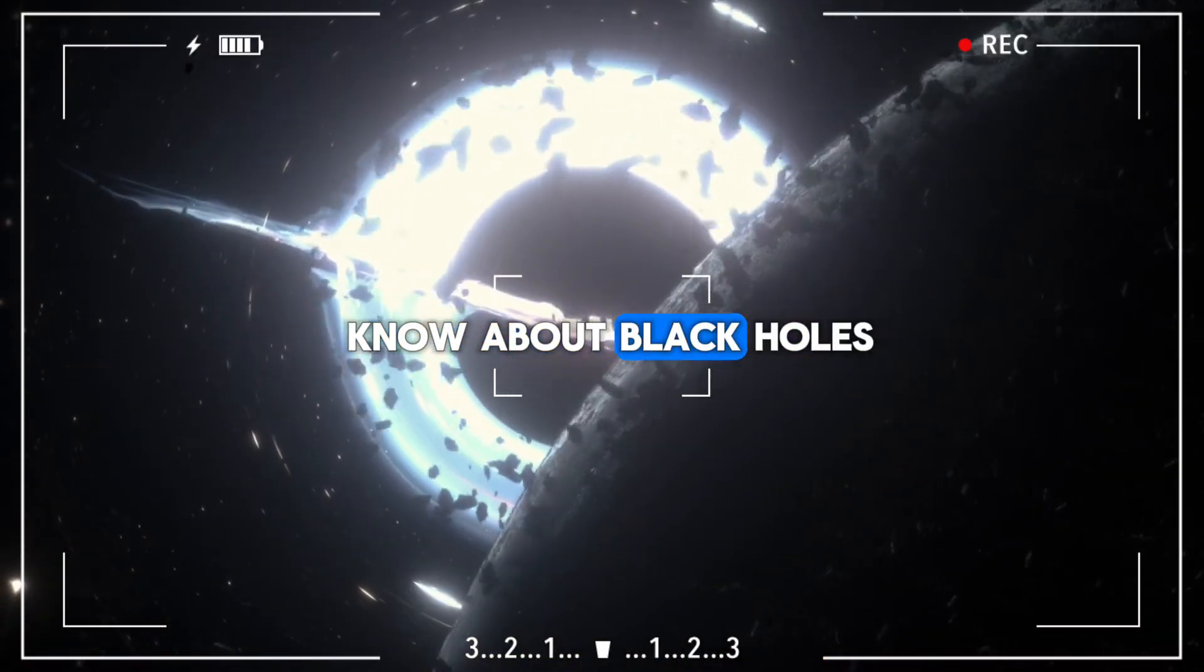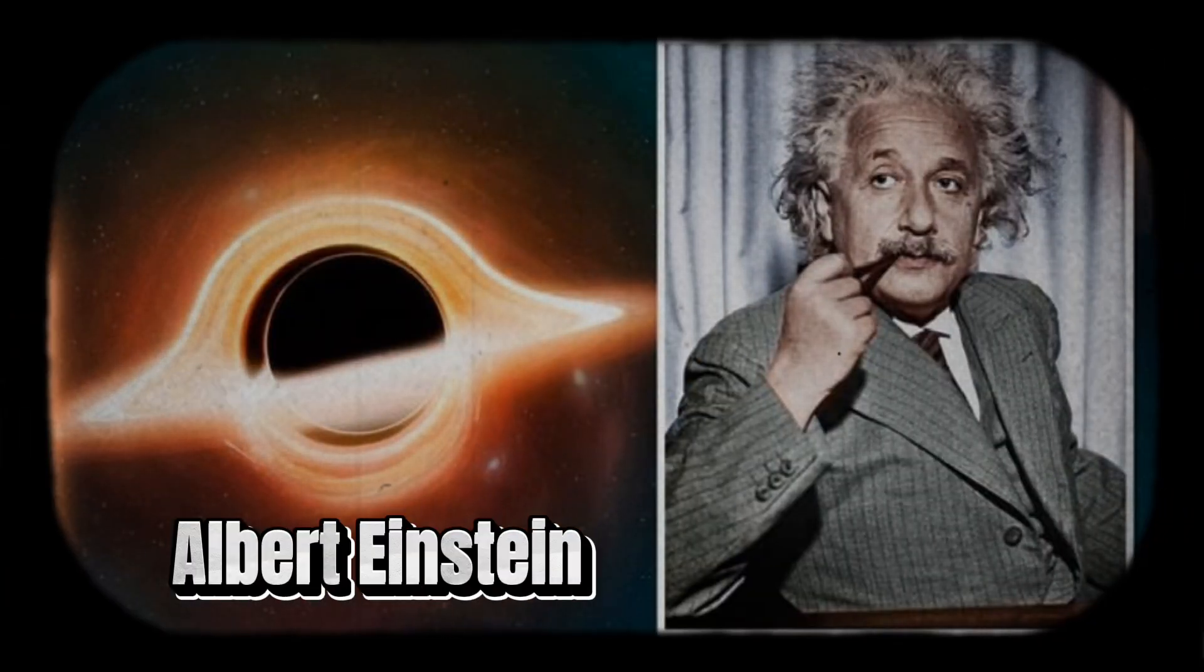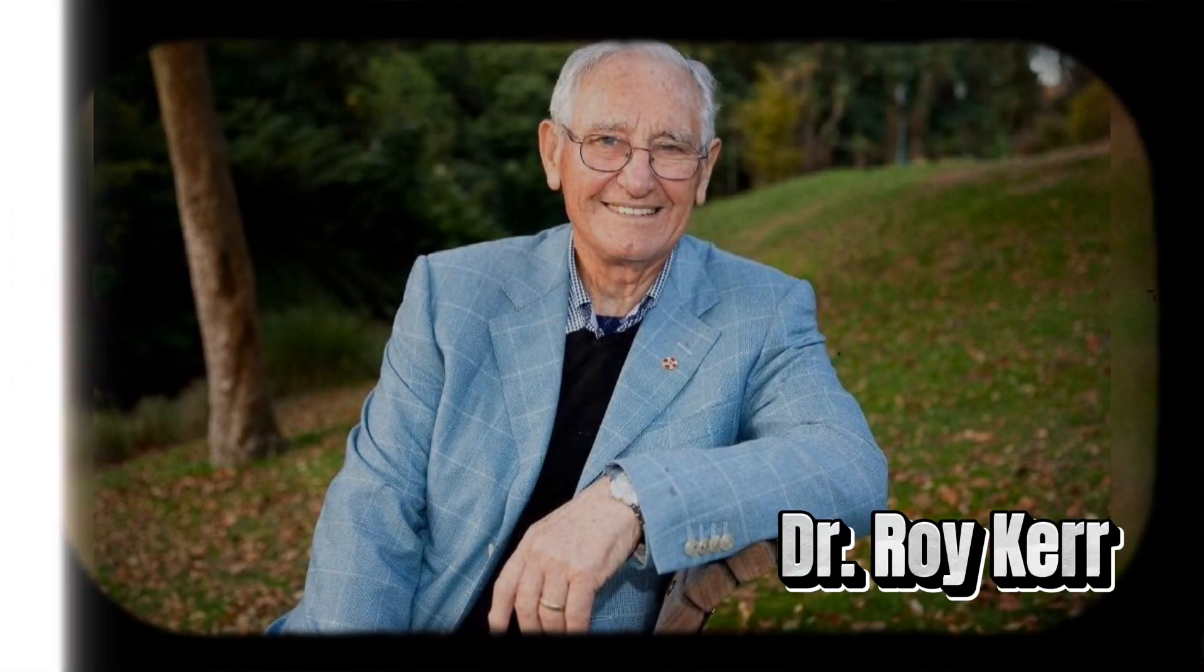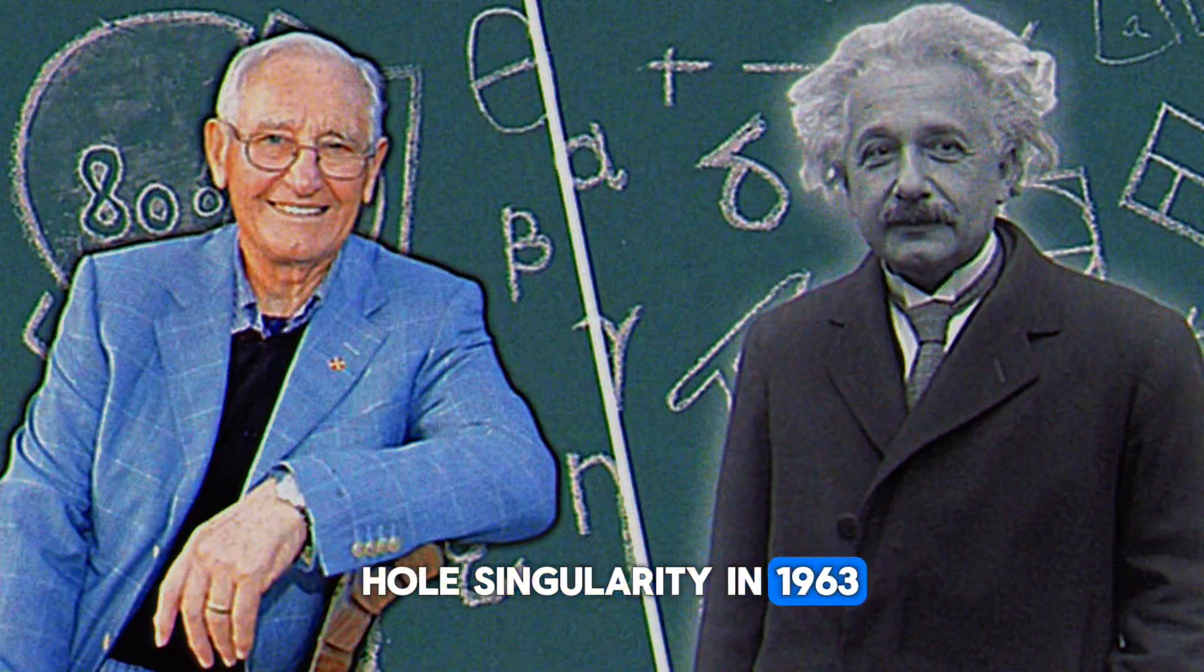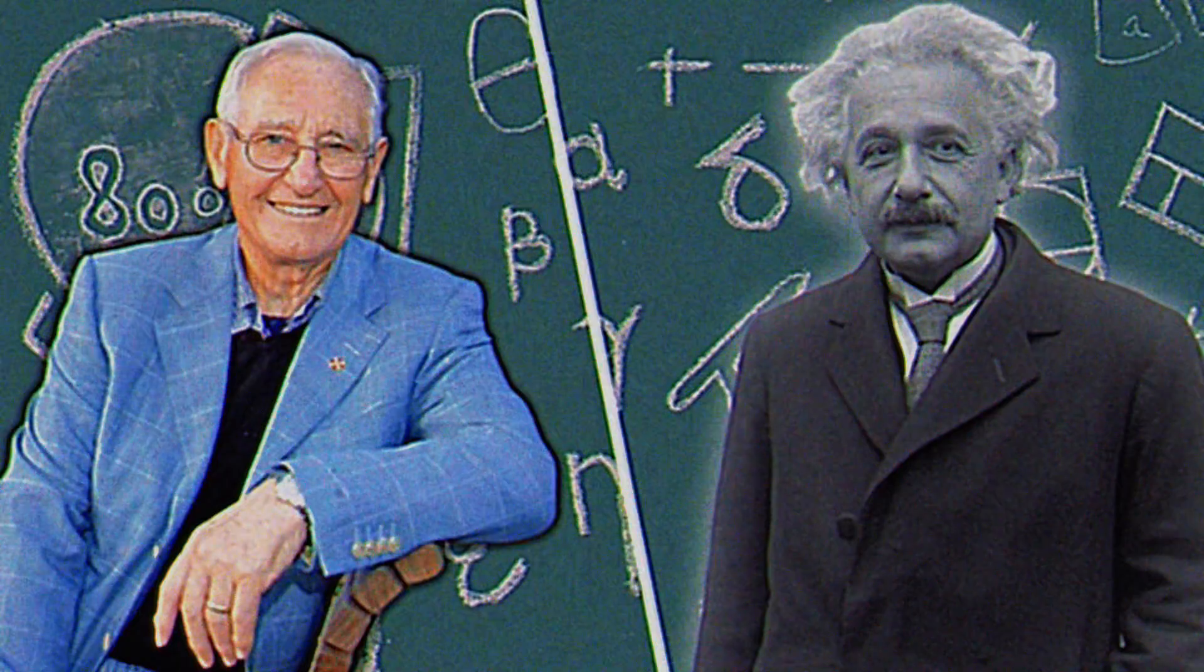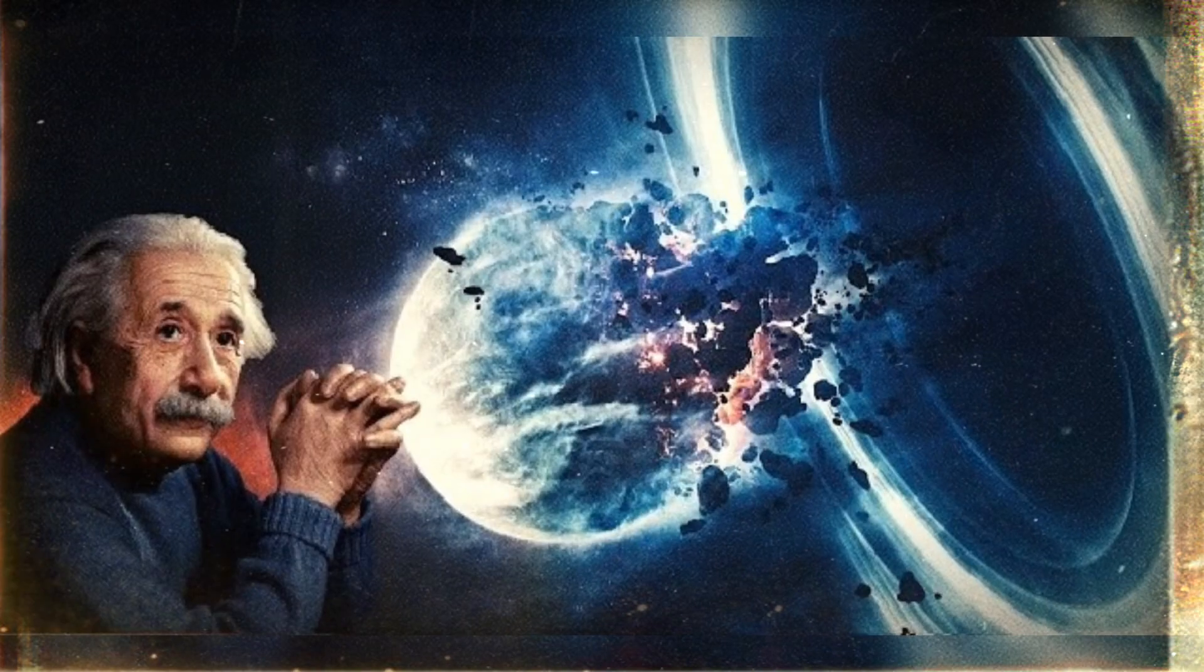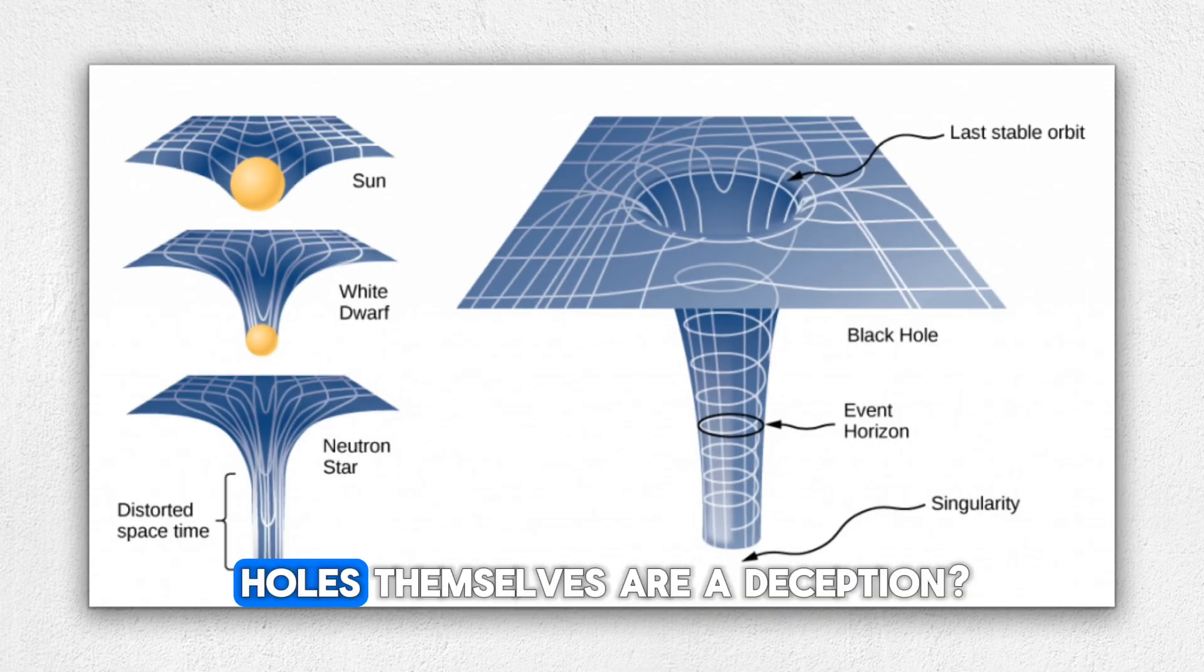What you think you know about black holes might be incorrect. The groundbreaking theory proposed by the brilliant scientist Albert Einstein may have been disproven. Dr. Reicher, a renowned mathematician from New Zealand, challenged Einstein's concept of black hole singularity in 1963, asserting that the point where a black hole's mass and gravity converge does not actually exist. This contradicts Einstein's belief in singularity.